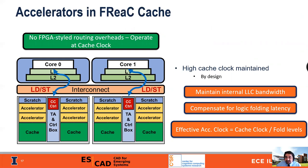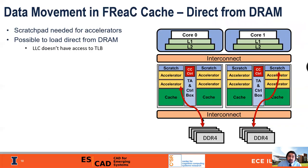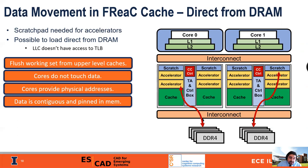By design, we've tried to make sure we can maintain the cache clock. By not including FPGA-style routing, we're actually able to maintain the original cache clock frequency. This is key because we want to maintain the internal bandwidth of the LLC and compensate for logic folding latency. The effective accelerator clock speed is the cache clock speed divided by the total number of fold levels. The accelerators still need to access data from somewhere, and while we do have scratch pads, they need to be filled. We could load from DRAM, but the LLC doesn't have access to a TLB.